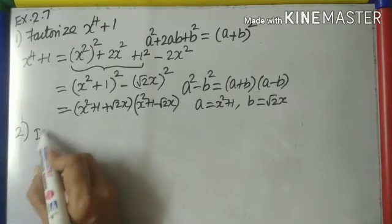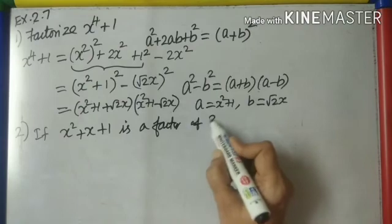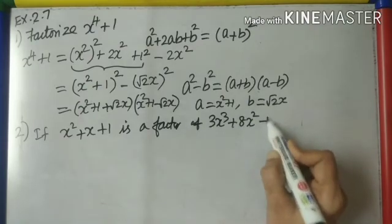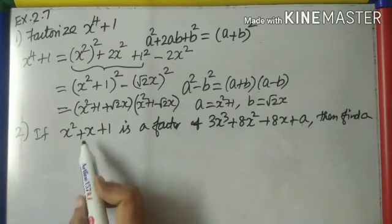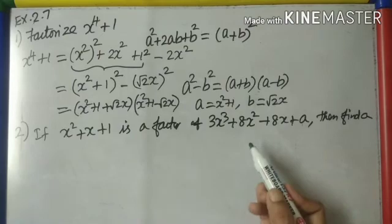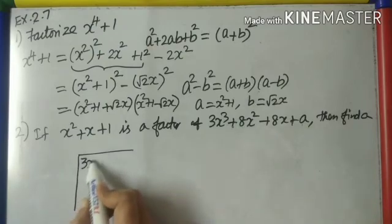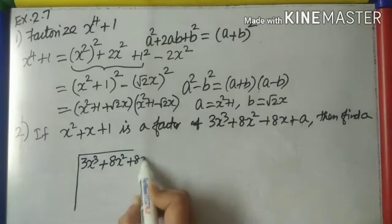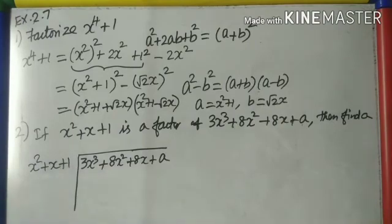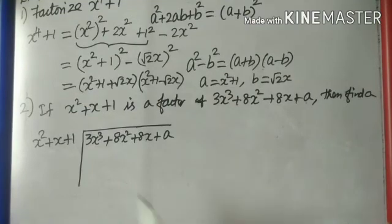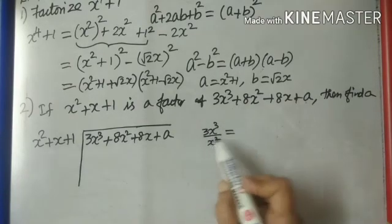Question number 2: if x²+x+1 is a factor of the polynomial 3x³+8x²+8x+a, find a. Since it is a factor, we can divide 3x³+8x²+8x+a by x²+x+1 using ordinary long division. First term by first term: 3x³ ÷ x² = 3x, so the first term of the quotient is 3x.